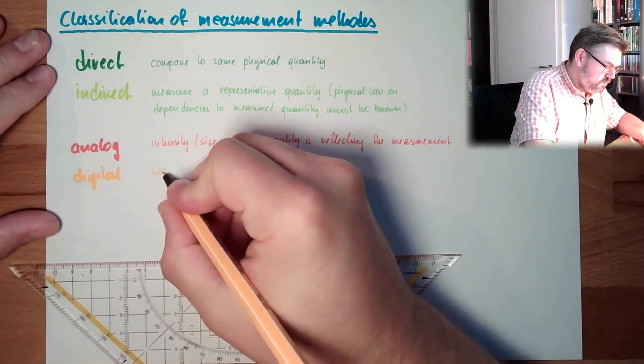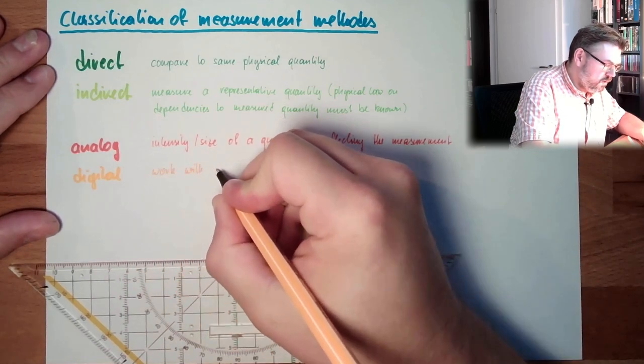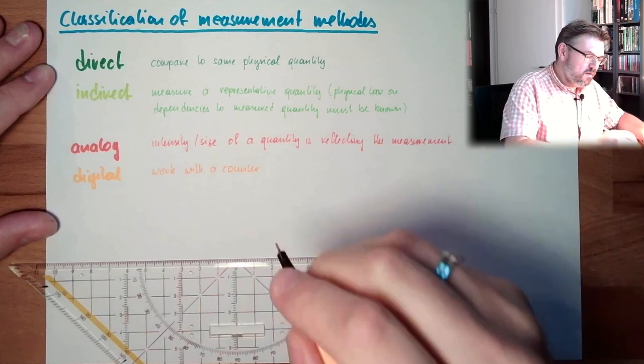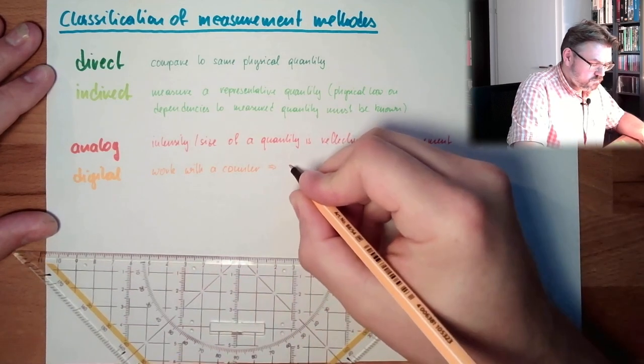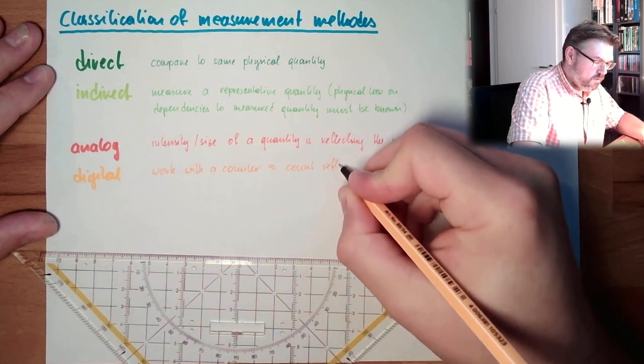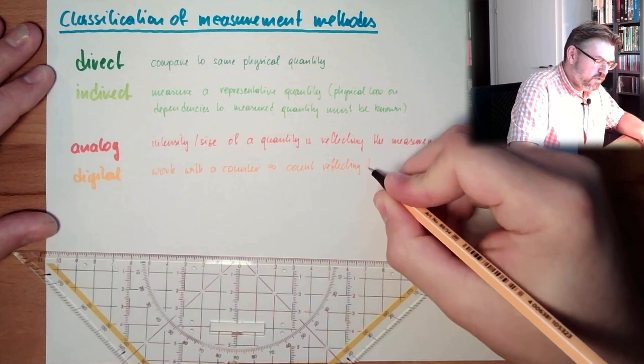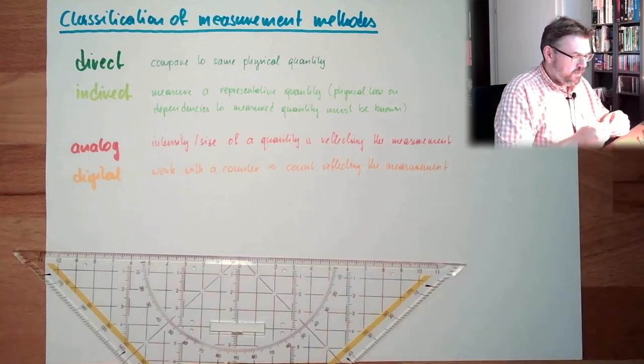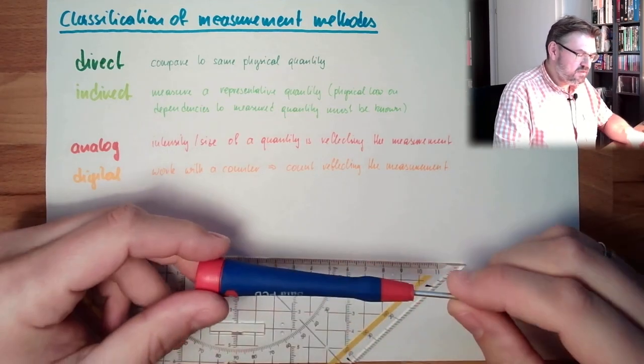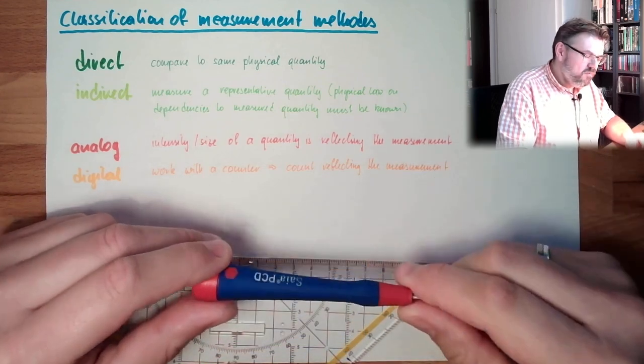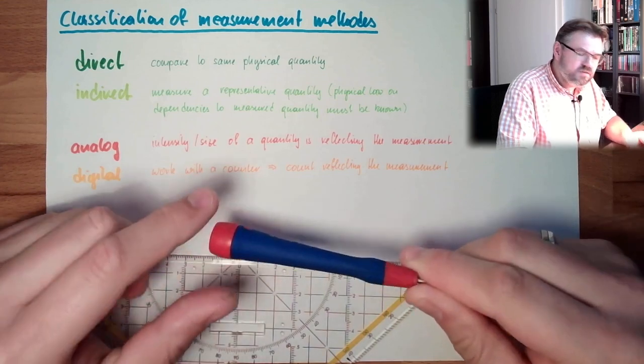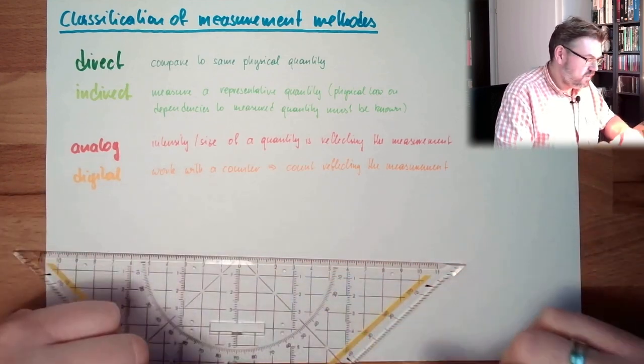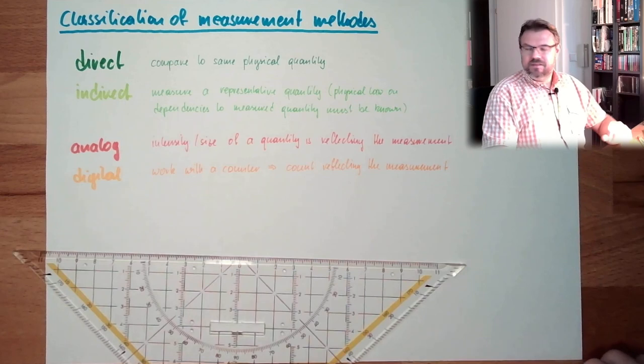Digital measurements always work with counting. They work with a counter. We are counting something. Count reflecting the measurement. But it's a high count, it's a high speed. It's a low count, it's a low speed. Why isn't that analog? Because I only count one and two. There is no one and a half. In an analog measurement, there can be anything in between. Analog and digital.